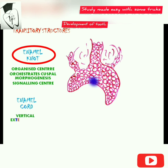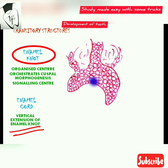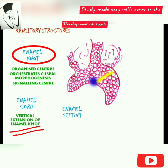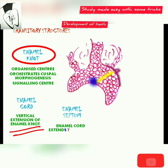Both the enamel knot and the enamel cord act as a reservoir of dividing cells for the growing enamel organ. When the enamel cord extends to meet the outer enamel epithelium, it would divide the stellate reticulum into two parts, and this is called the enamel septum.